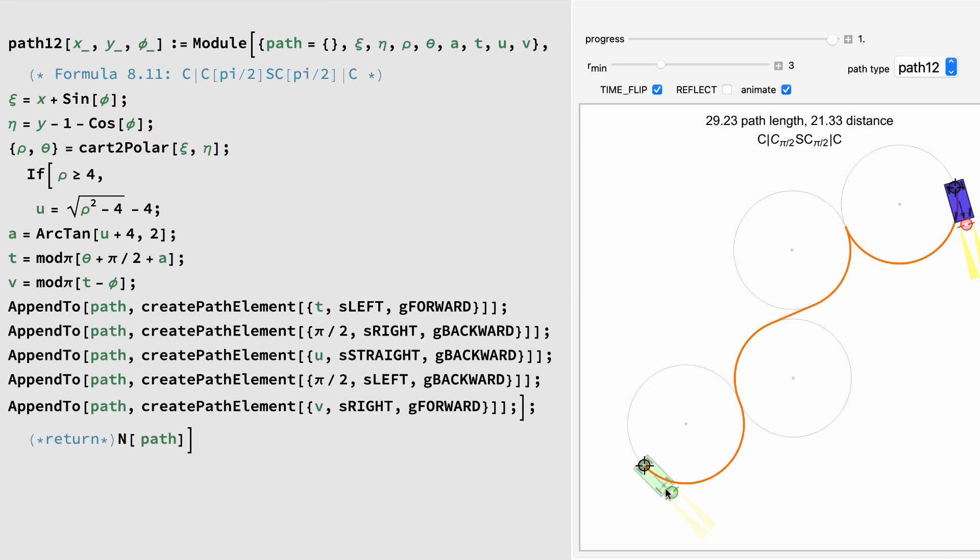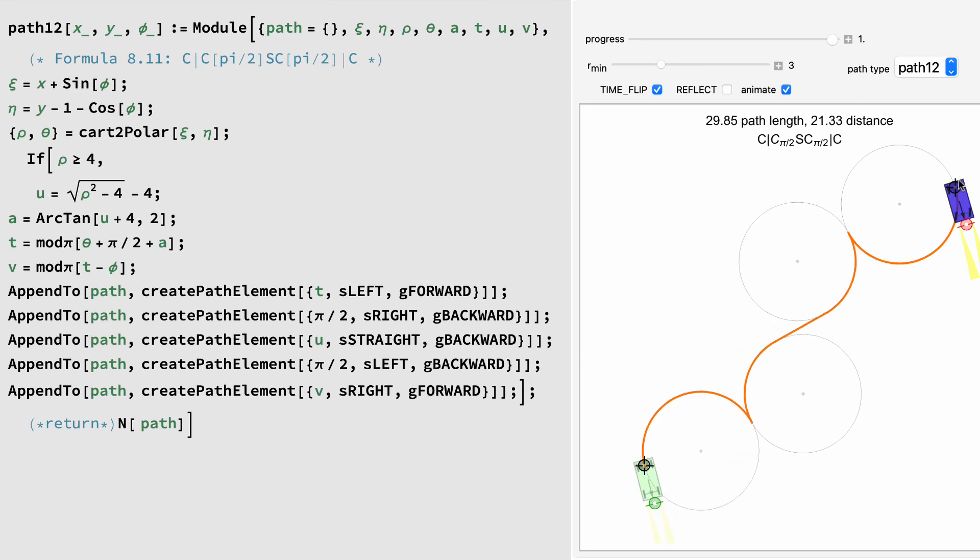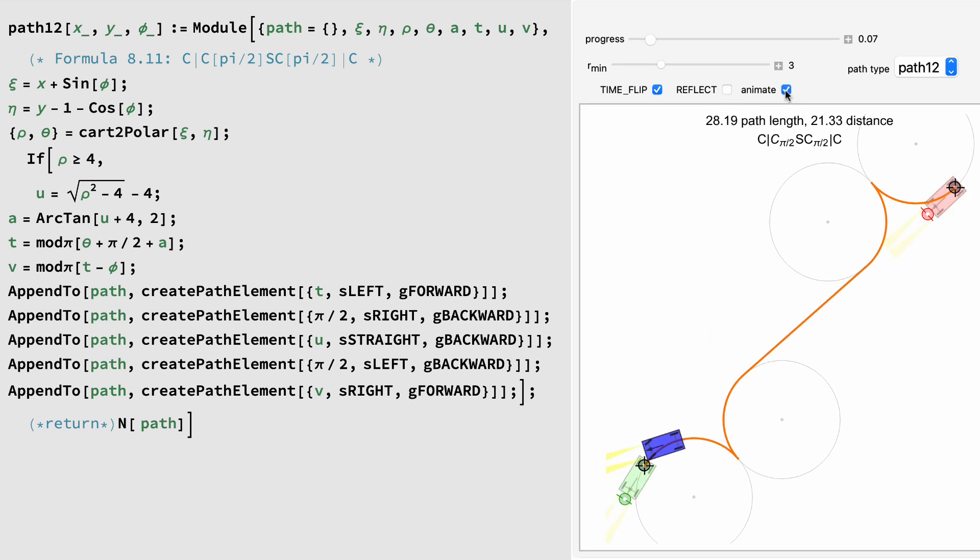Finally, path 12 is a five segment path. Curve, gear shift, curve 90 degrees, straight, curve 90 degrees, gear shift, curve. It sounds complicated, but only three trig operations and a Cartesian to polar conversion. This one only exists if the distance is greater than four.